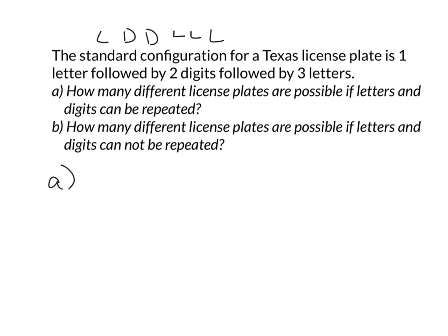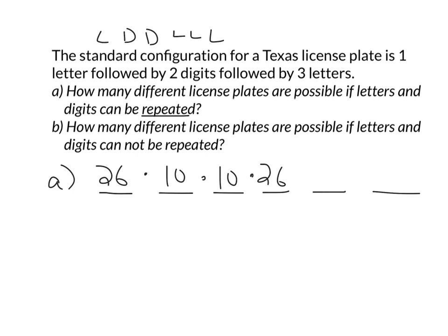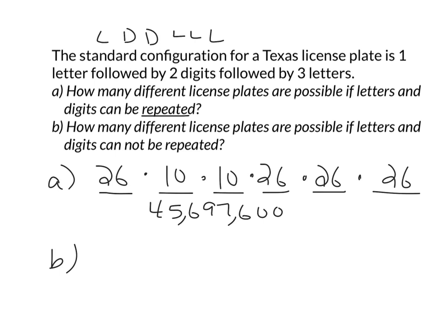I'm going to draw blanks for each spot: letter, digit, digit, letter, letter, letter. For the first blank I have 26 choices of letters. For the first digit I have 10 digits to choose from. Because repeating is allowed, I also have 10 choices for the next digit - you could use seven twice in a row. And because I can repeat, I have 26 more choices for each of the remaining letters. Punching that in: 26 to the fourth power times 100 equals 45,696,000 - about 45 million license plates if you can repeat digits.